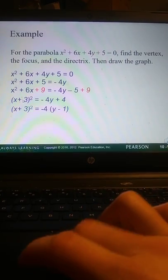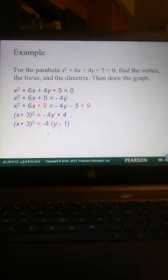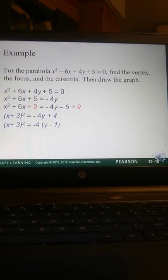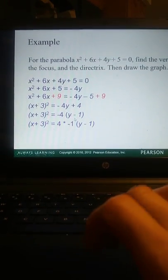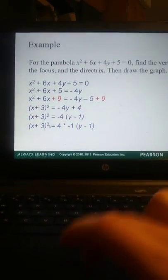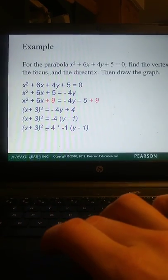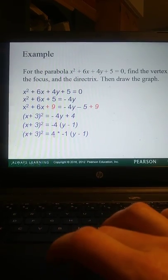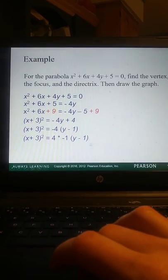We have negative 4Y plus 4 on the right. So we want to factor out that negative 4. So we factor out the negative 4, because now we can see where our H and K values are. We're going to do one more step too. We're going to pull out that 4. Because remember, we have to pull out the 4 in order for it to be in that correct format. We have X plus 3 squared, so that's the left side, equals 4 times negative 1. There's our P, and then Y minus 1.